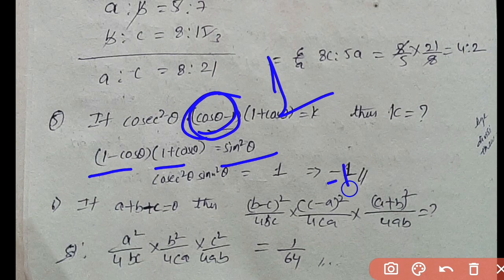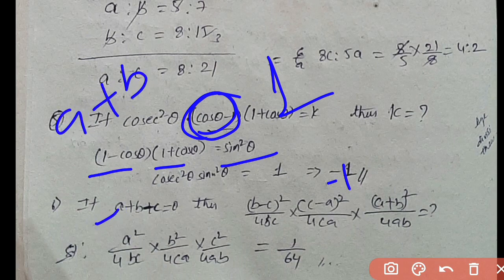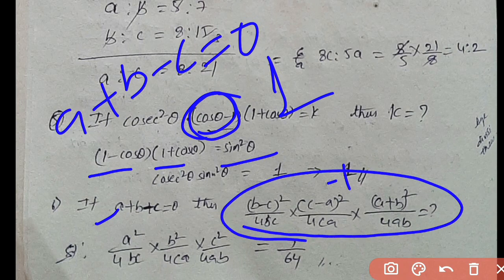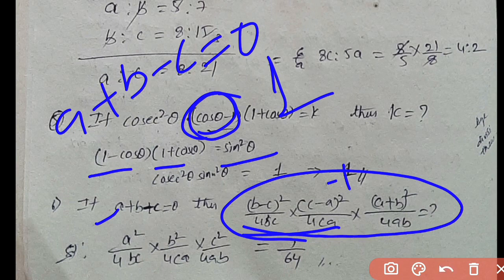Next algebraic question: a + b − c = 0, find the value. This is a normal question, easy to do from previous papers. Directly multiply the value to elaborate the answer.